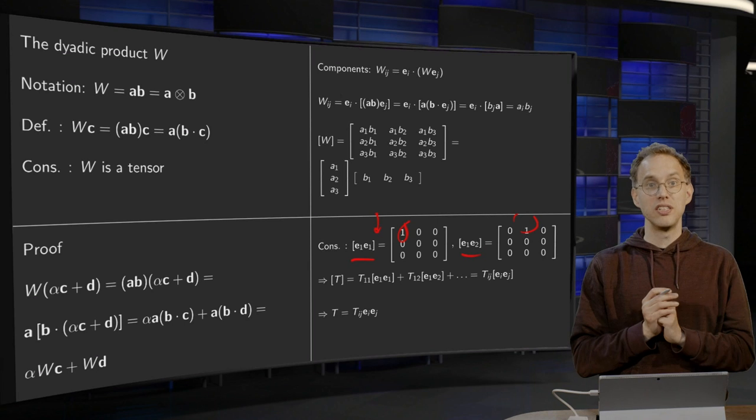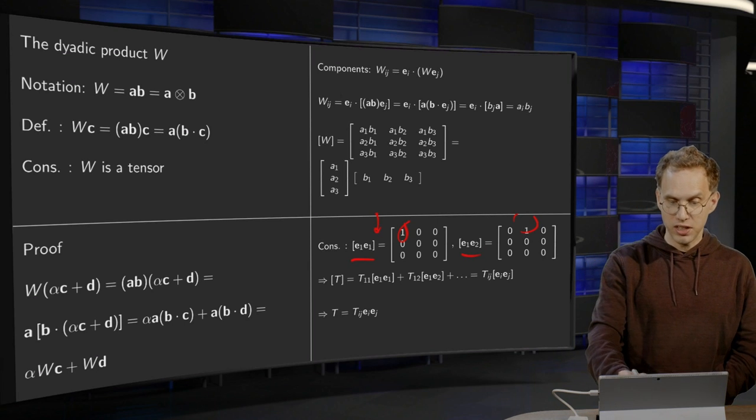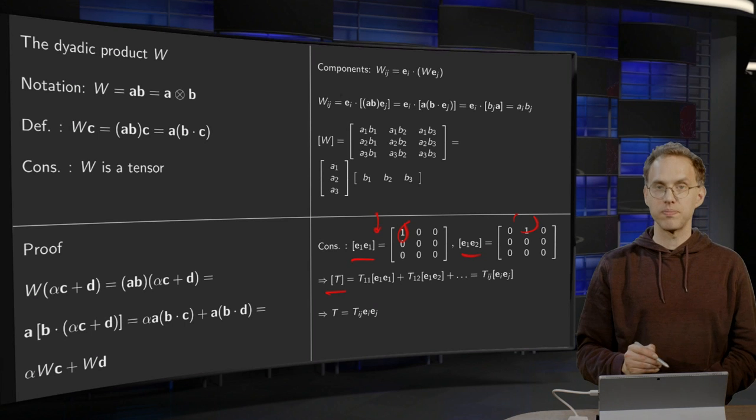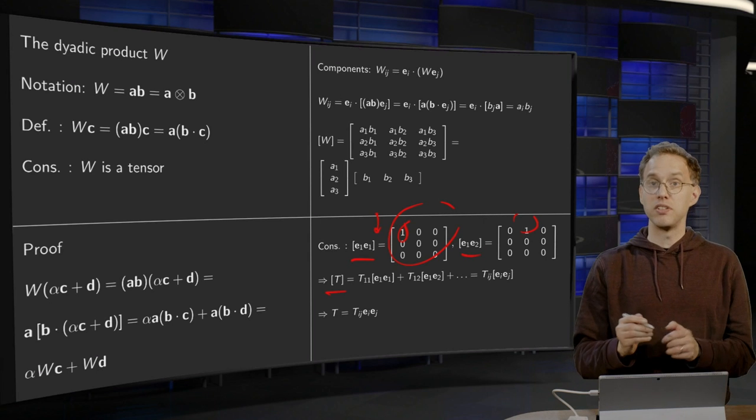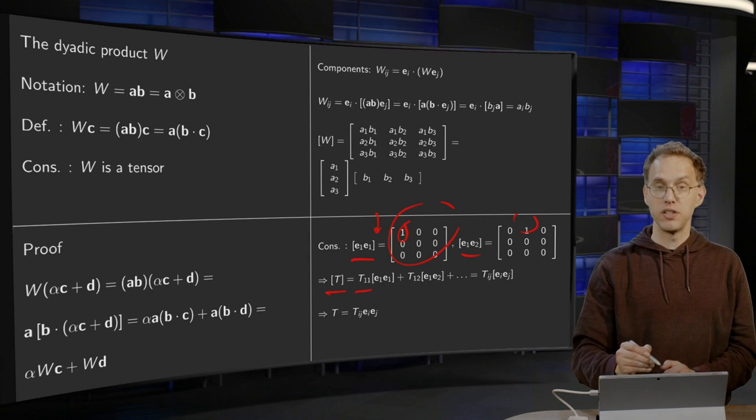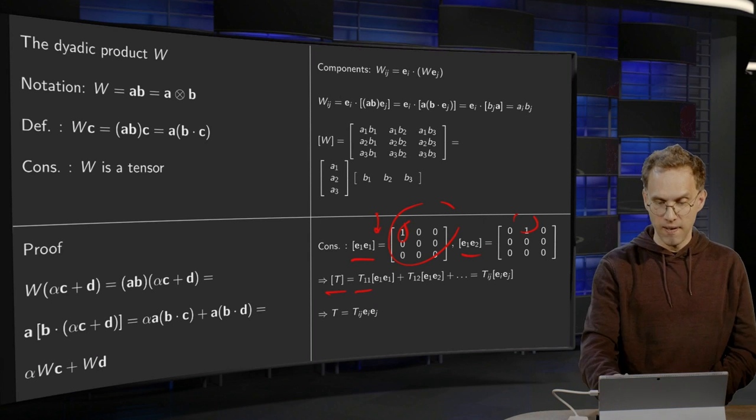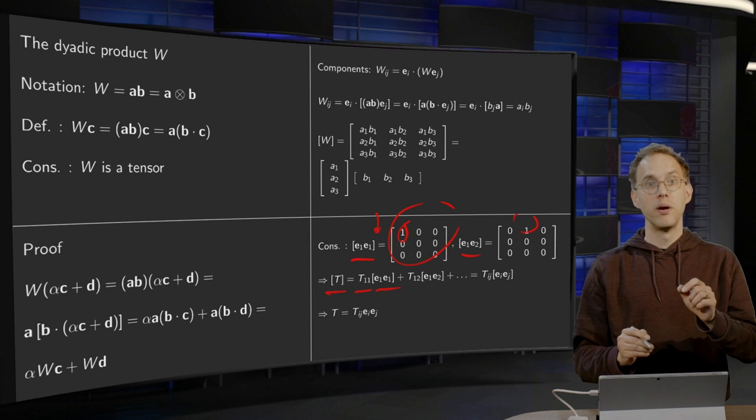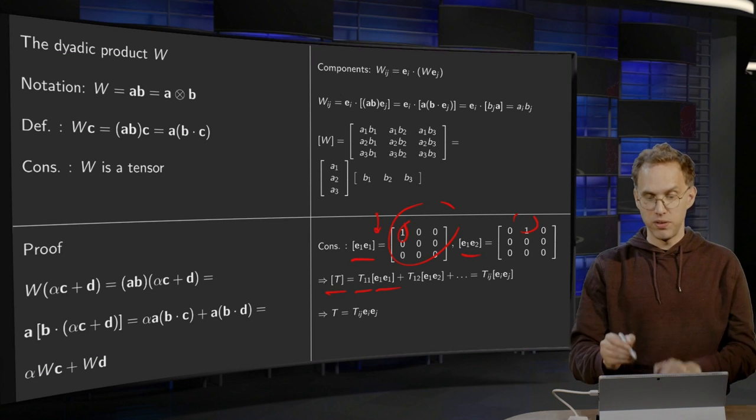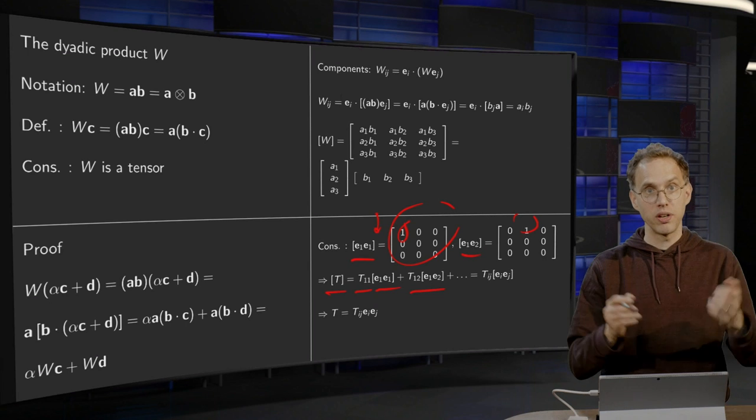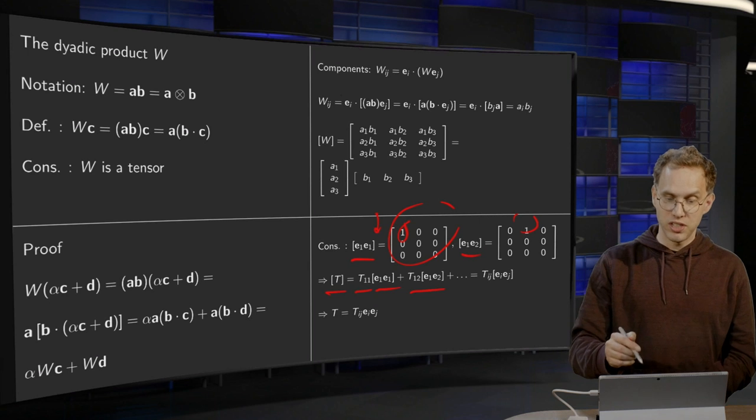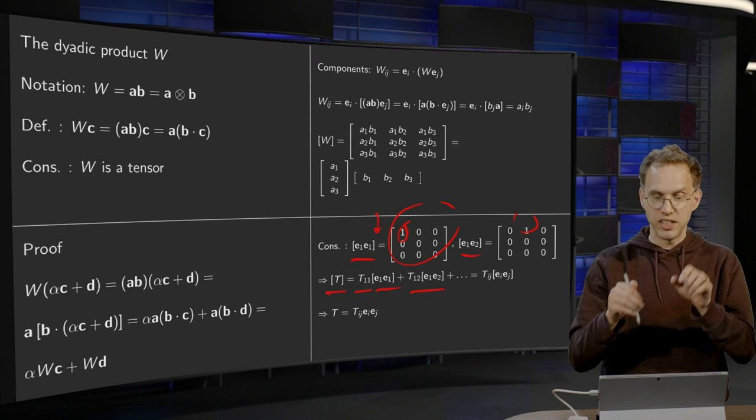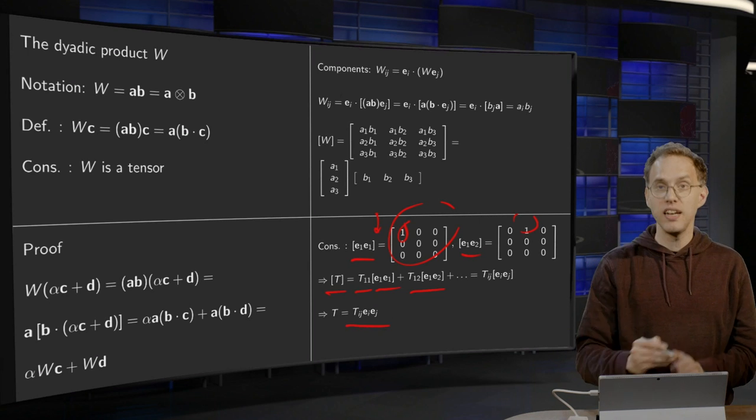So, using this, you can rewrite the matrix of your tensor T using 9 of these matrices, because it's basically your T1, 1, the element over here, times your E1, E1, plus the element over here T1, 2 times E1, E2, and so on and so forth. So, this means that you can rewrite your T as Tij times your EiEj.